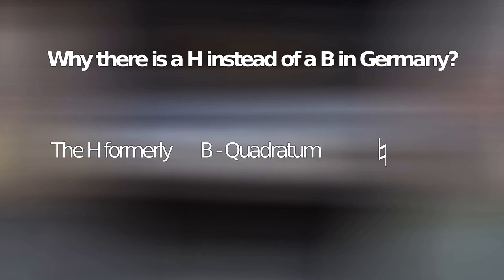For example, the H was called B quadratum and had this squarish sign. And the lowered H, meaning the German B, was called B rotundum and had this B sign.